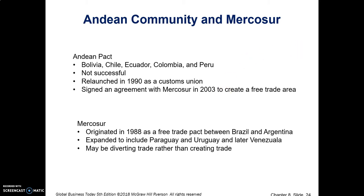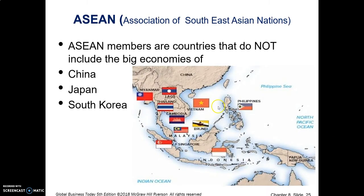To clarify: the Andean Pact is a customs union and Mercosur is referred to as the Southern Common Market. Both have gone through significant difficulties. The Association of Southeast Asian Nations includes member countries that do not include China, Japan, or South Korea. There is a significant population base and diversity within that association.